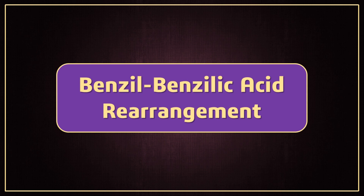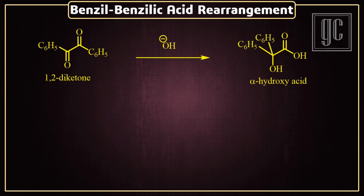In this video we are going to discuss the benzylic acid rearrangement. This is a base-catalyzed reaction in which 1,2-diketones are rearranged to give alpha-hydroxy acids. This is also known as benzylic acid rearrangement. The necessary condition is that acidic alpha hydrogen must not be present in the molecule.